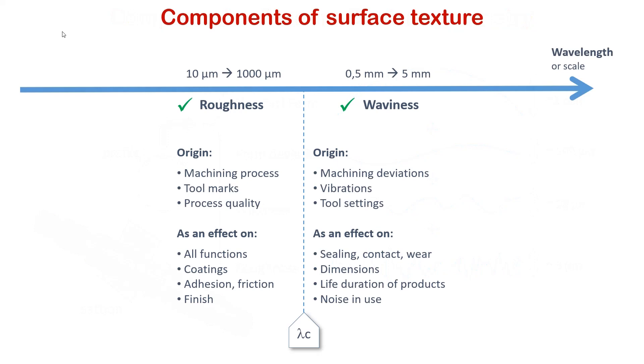Waviness is made of longer wavelength components than roughness. They are separated in practice using a filter which can be adjusted by a cutoff lambda C that depends on the application. Roughness is the most important for almost all functions. Each machining process leaves a signature on the surface which results in specific roughness and oriented grooves.